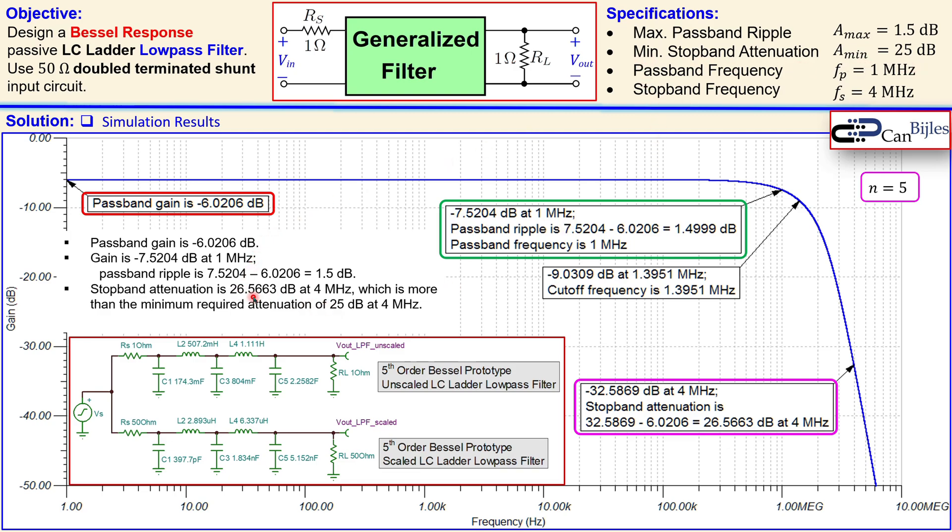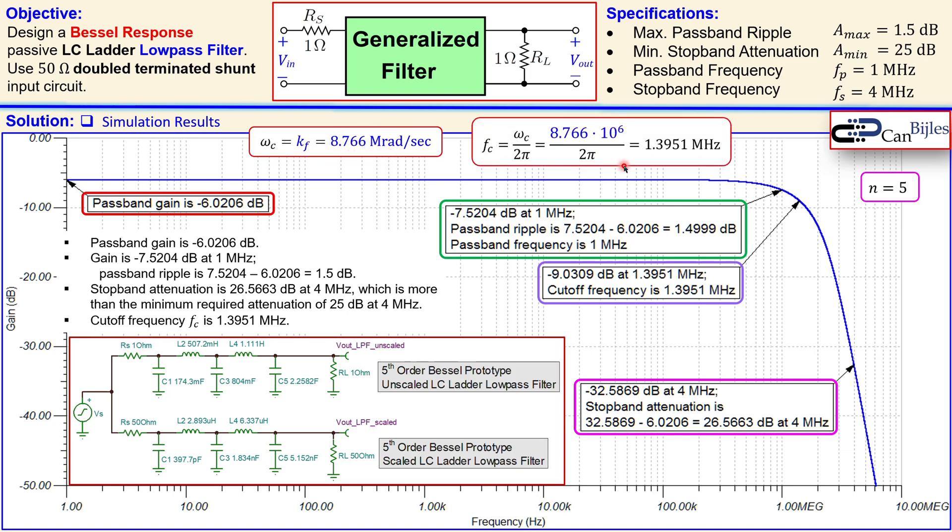Now the final one is the cutoff frequency which was not a specification but we have actually also this labeled here. That's actually shown is approximately 1.3951 megahertz. And why is this correct? You already said that in the discussion of the calculations that kf, the frequency scaling factor, is actually our cutoff frequency in radians per second. And if you now convert this 8.766 megahertz radians per second to megahertz you just divide by 2π and that is actually what you also see here. So that is also verified. So all the specifications are met. In addition we have also shown how to calculate the cutoff frequency here for this low pass filter design using the LC ladder configuration for this Bessel response. So everything is checked.